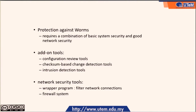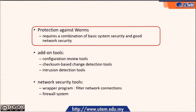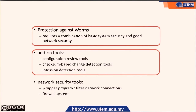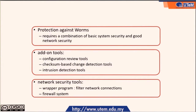How can we protect against worms? Protection against worms requires a combination of basic system security and good network security. We need add-on tools, configuration review tools, checksum-based change detection tools, and intrusion detection tools. We also need network security tools, wrapper programs, filtered network connections, or a firewall system.